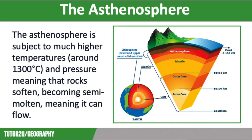Below the lithosphere, but still in the mantle, you will find the asthenosphere — the denser, weaker layer which lies between 100 and 400km below the Earth's surface. The lithosphere and the asthenosphere have the same chemical composition, but they have different mechanical properties. The mantle is made of solid rock, but the asthenosphere is subject to a much higher temperature of around 1300 degrees and pressure, meaning that rocks soften, being semi-molten and ductile, meaning it can flow. It will not melt entirely, though, due to the high pressure.